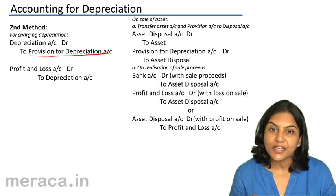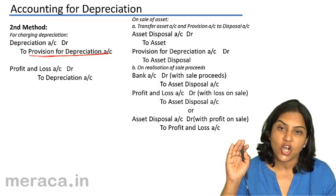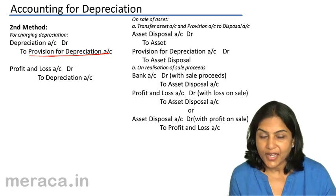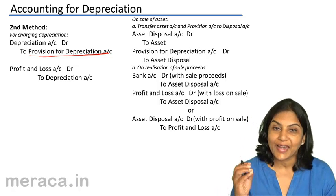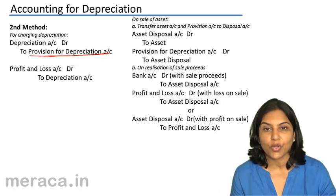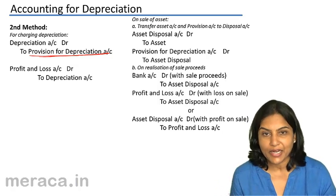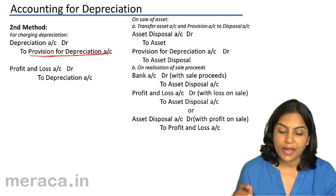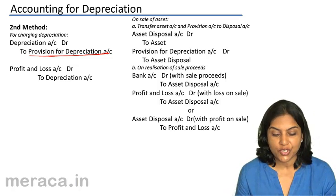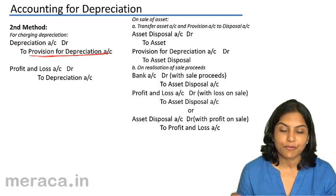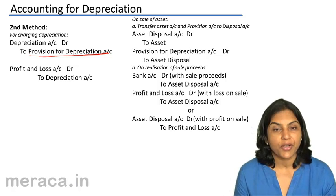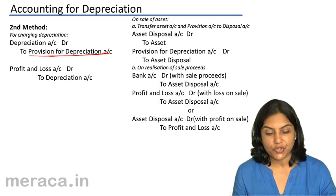The asset continues to be maintained at the cost at which it was purchased. In this way, we get an idea of the original cost of the asset whenever we look at the balance sheet. Depreciation account is debited to provision for depreciation, and this depreciation is transferred to profit and loss account — profit and loss account debit to depreciation.